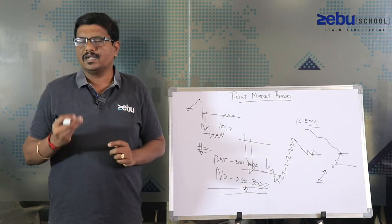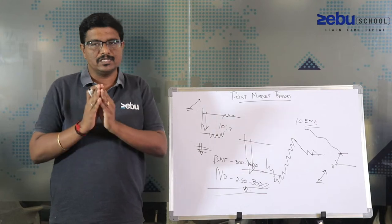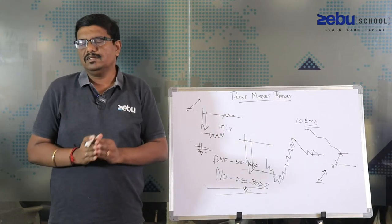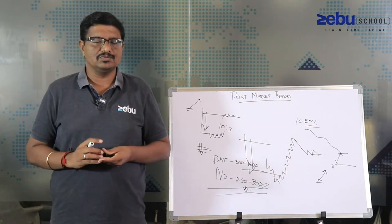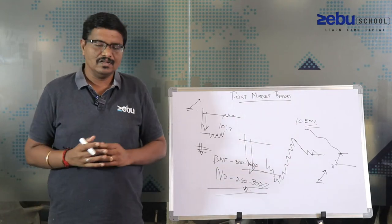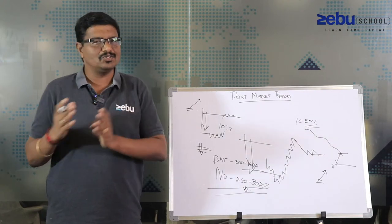I'm not trading with higher quantities. Whatever shorts I had, I was trying to monetize here and there, and I've slightly initiated long positions, but ensured I have risk in control if there's a sudden fall.